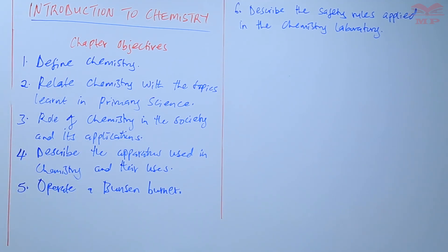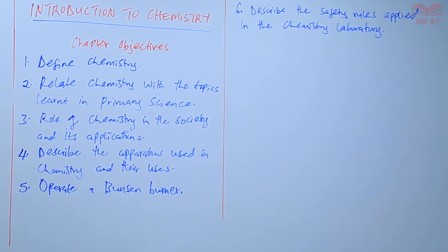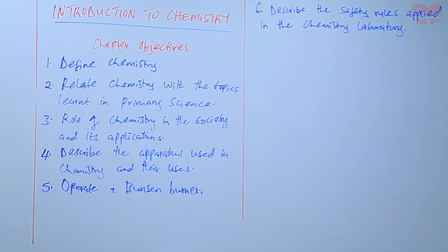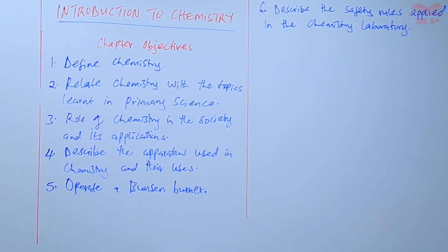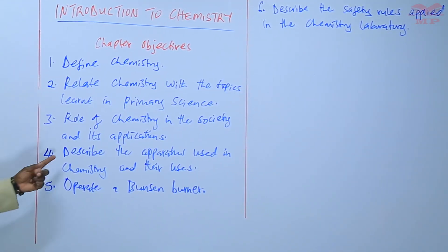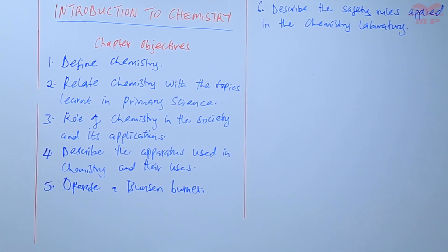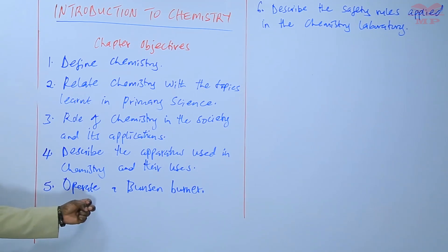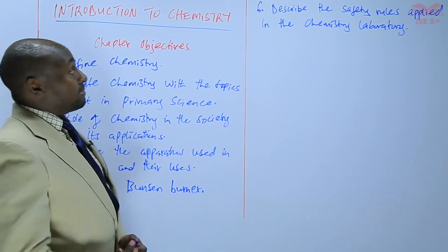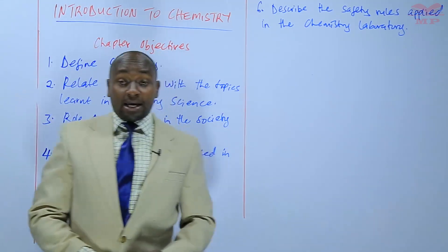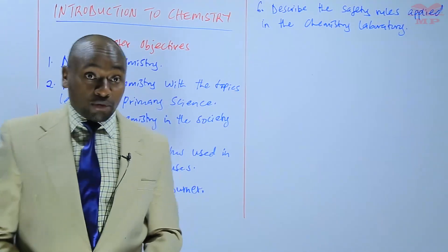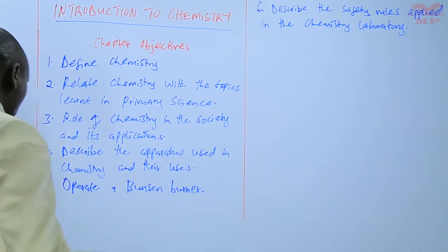By the end of the chapter, the learner should be able to: define chemistry; relate chemistry with the topics learned in primary science; understand the role of chemistry in the society and its applications; describe the apparatus used in chemistry and their uses; operate a balance and burner; and describe the safety rules applied in the chemistry laboratory.